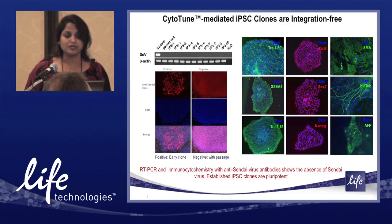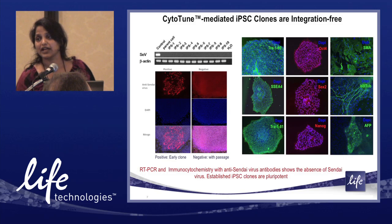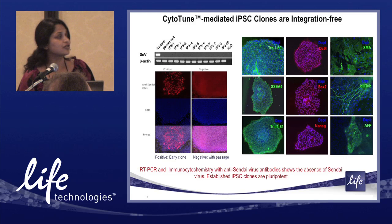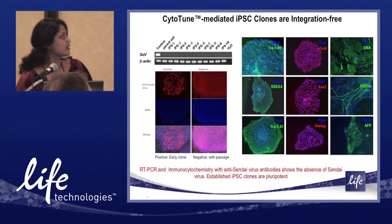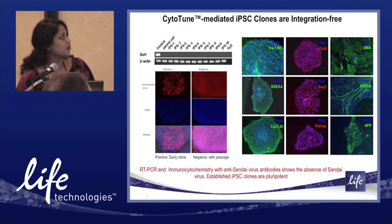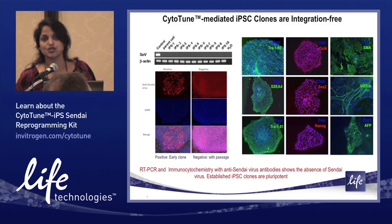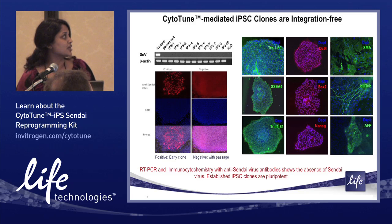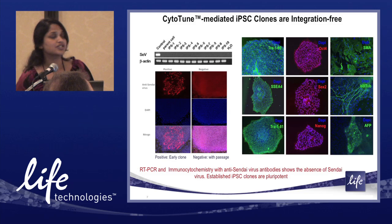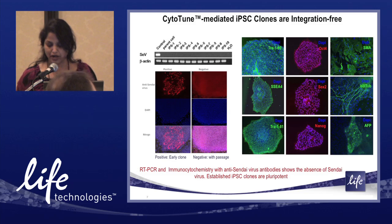This method is integration-free. Using PCR, we were able to show that there is absolutely no viral genome left in established clones — shown here are 10 independent clones. You can also use an antibody, although the antibody signal is not ideal, as there is haze in negative cell types and you can only confirm negativity when you have a robust positive control. These cells are pluripotent in both marker expression and differentiation into different lineages via embryoid body formation.